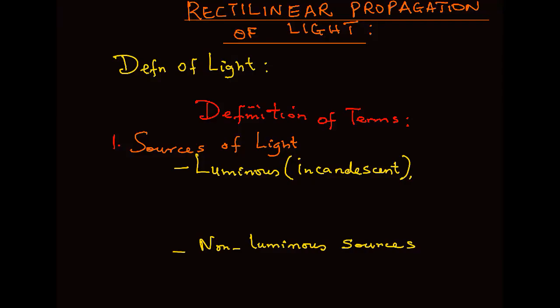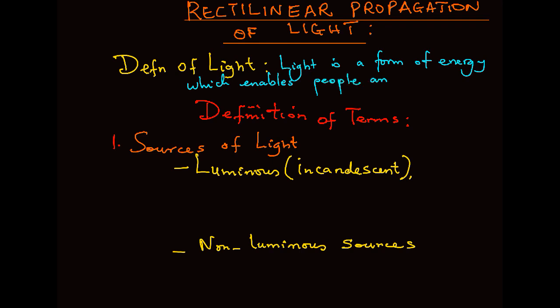Rectilinear propagation of light. Light is a form of energy that enables animals and people to see. People are able to see objects when light energy from the objects enters the eye.